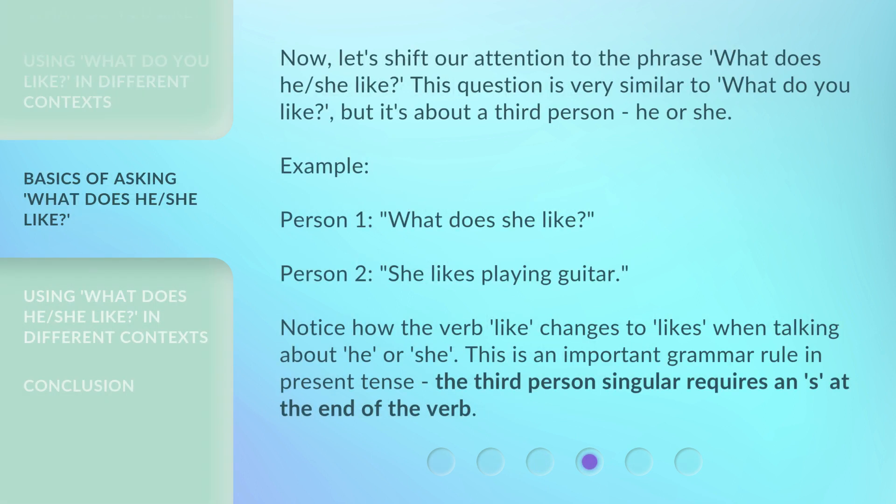Now, let's shift our attention to the phrase 'What does he/she like?' This question is very similar to 'What do you like?' but it's about a third person — he or she. Example — Person 1: 'What does she like?' Person 2: 'She likes playing guitar.' Notice how the verb 'like' changes to 'likes' when talking about he or she. This is an important grammar rule in present tense: the third person singular requires an 's' at the end of the verb.